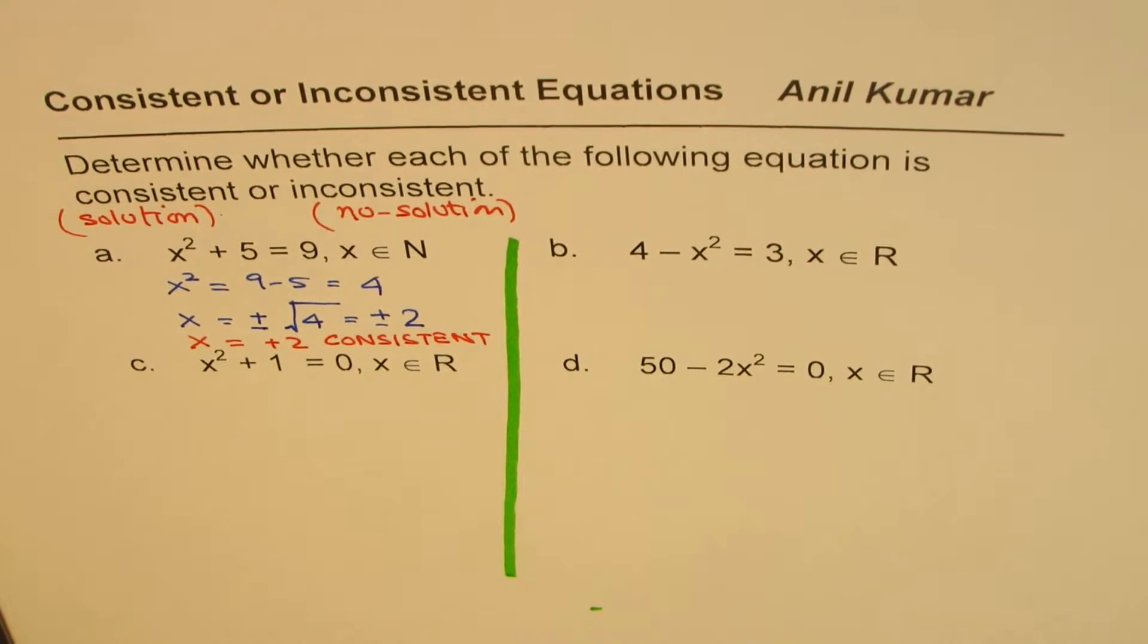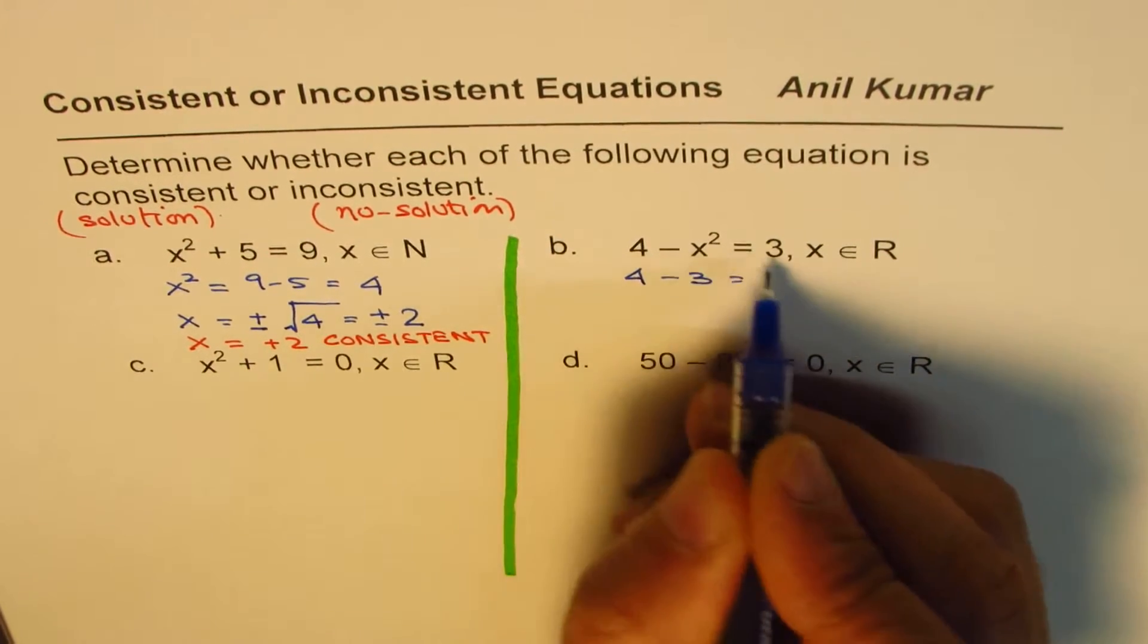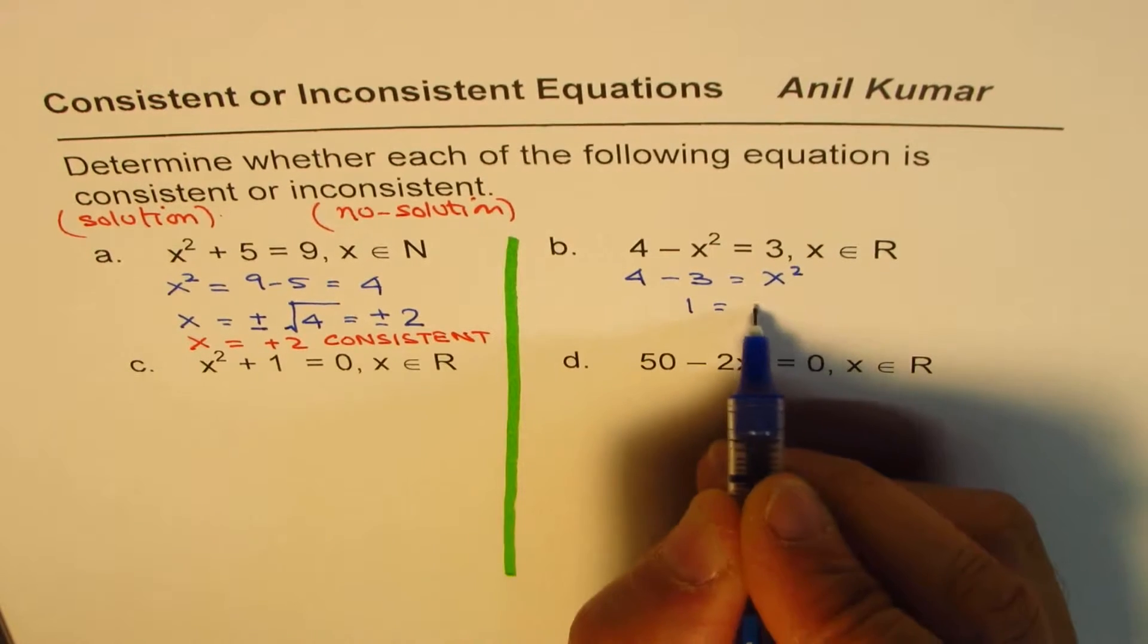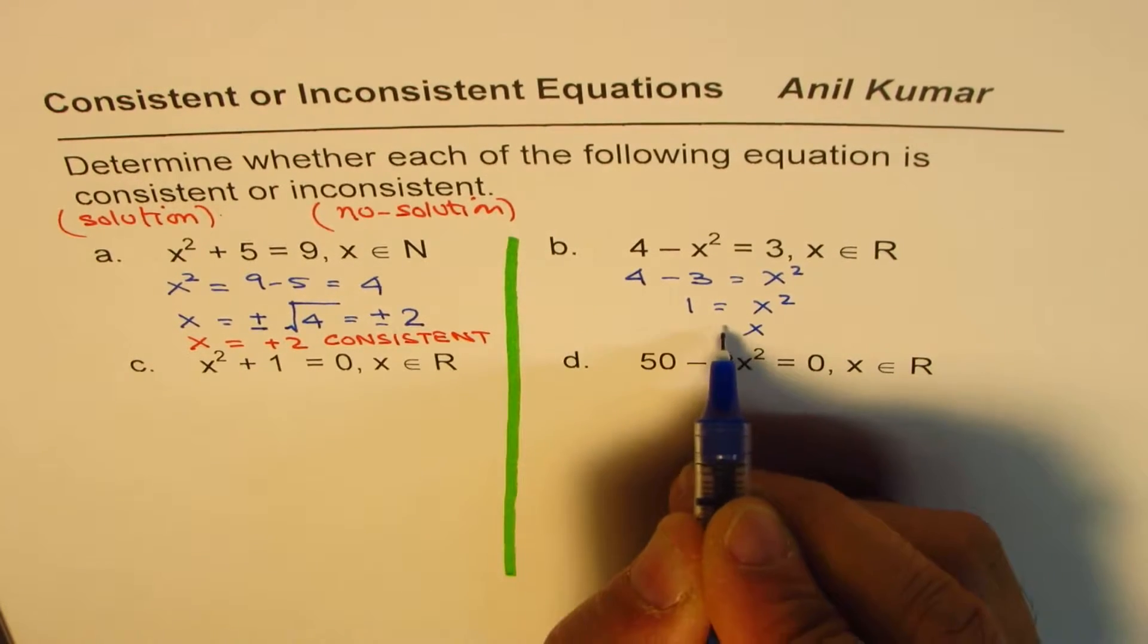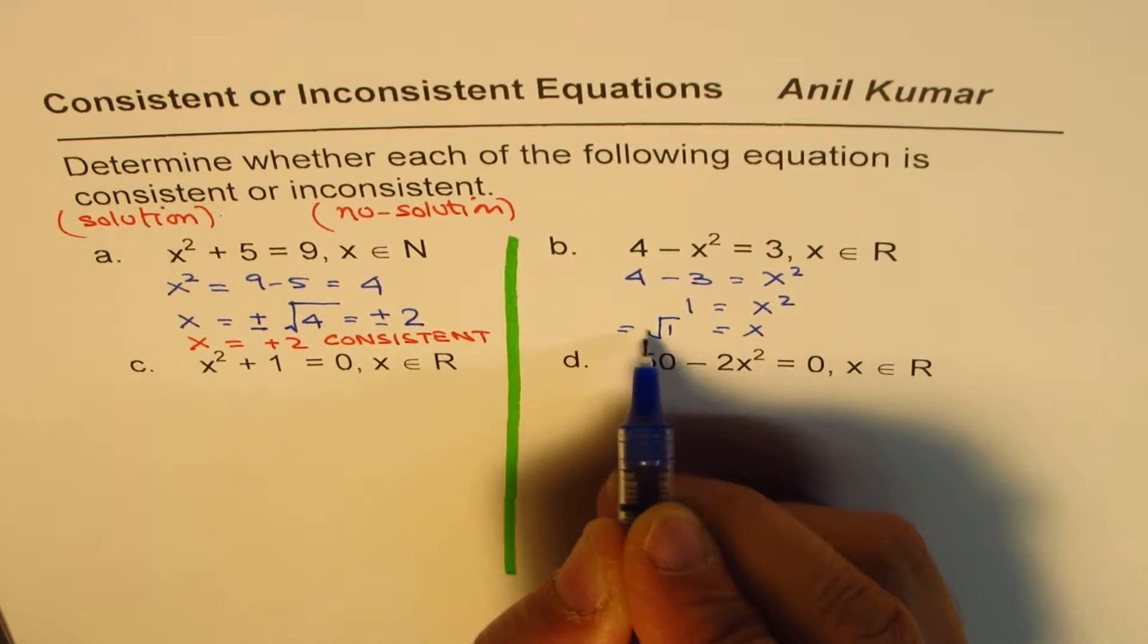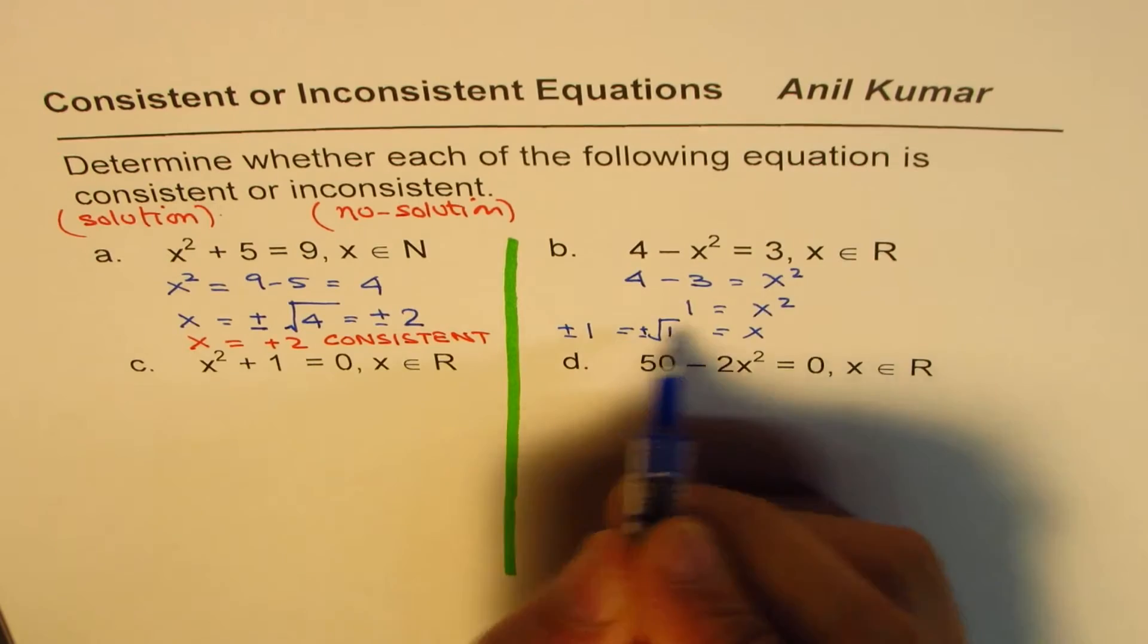Now let's solve the next one. So it is 4, bringing 3 to the side, x squared to the other side belongs to real numbers. This is 1 equals to x squared. So x is equals to square root of 1, which is with plus and minus. So it is plus and minus 1. And both are real numbers.